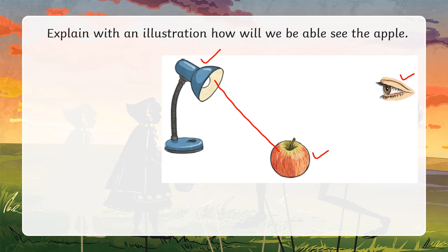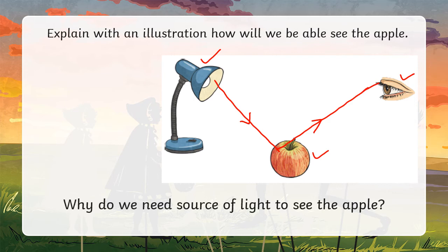First, from the light source, this is an illustration. Illustration means with an arrow I am showing: the light has to reach to the apple, and from apple light reflects back or bounces back and reaches our eyes, so we are able to see the apple.